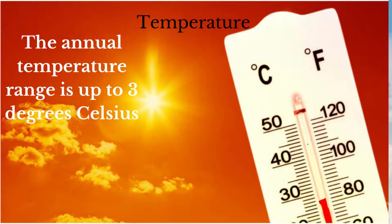These high temperatures are experienced all year round in equatorial regions, with average monthly temperatures of about 27 degrees Celsius. Temperature variations are low and insignificant. The annual temperature range — the difference between the warmest and coldest month — does not exceed three degrees Celsius, and is most often lower than three degrees Celsius.